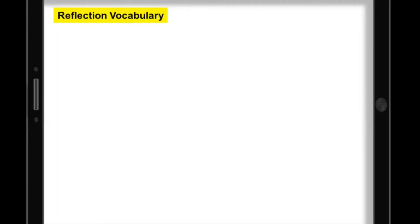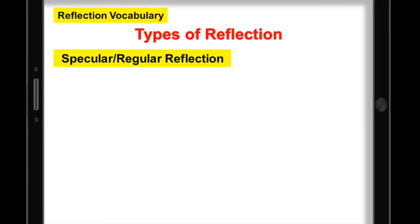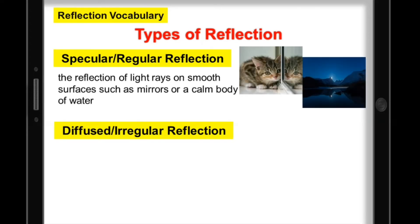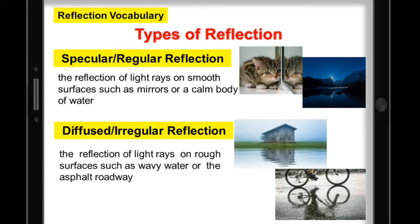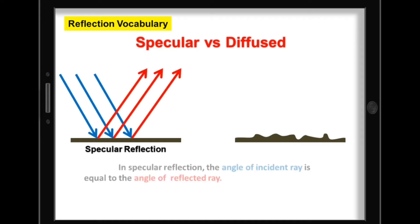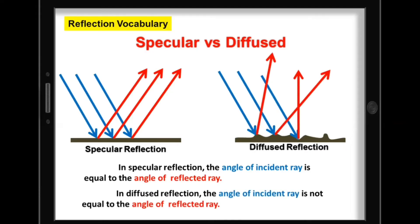Reflection can happen not only on smooth surfaces but also on rough surfaces. There are two types of reflection: specular or regular reflection, and diffuse or irregular reflection. Specular or regular reflection is the reflection of light rays on smooth surfaces such as mirrors or a calm body of water. Diffuse or irregular reflection is the reflection of light rays on rough surfaces such as wavy water or an asphalt roadway. In specular reflection, the surface is smooth so the angle of incident ray equals the angle of reflected ray, giving you a clear image. In diffuse reflection, the surface is uneven so the angles are not equal, giving you a blurry image.